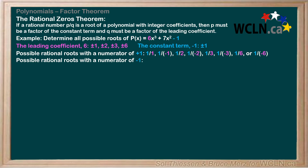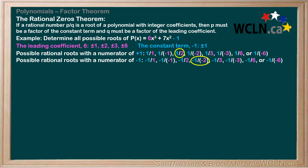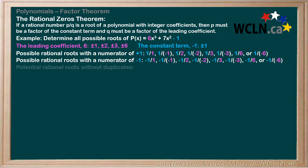Now let's generate all the possible rational roots with a numerator of negative 1: negative 1 over 1, negative 1 over negative 1, negative 1 over 2, negative 1 over negative 2, negative 1 over 3, negative 1 over negative 3, negative 1 over 6, or negative 1 over negative 6. Since a negative divided by a negative gives a positive, some of these potential rational roots are the same, like pairs equal to 1, 1 half, 1 third, and 1 sixth. Our final list of potential rational roots without duplicates is: plus or minus 1, plus or minus 1 half, plus or minus 1 third, and plus or minus 1 sixth.